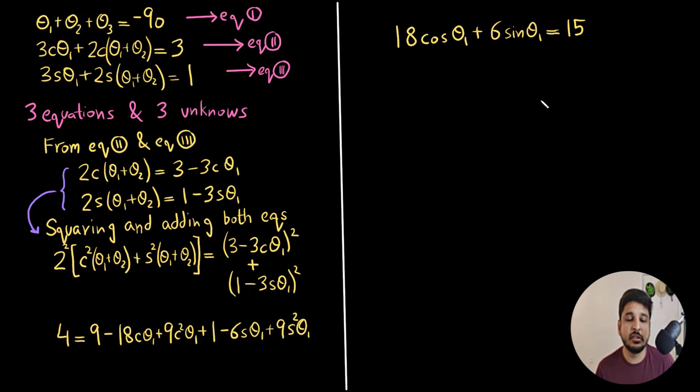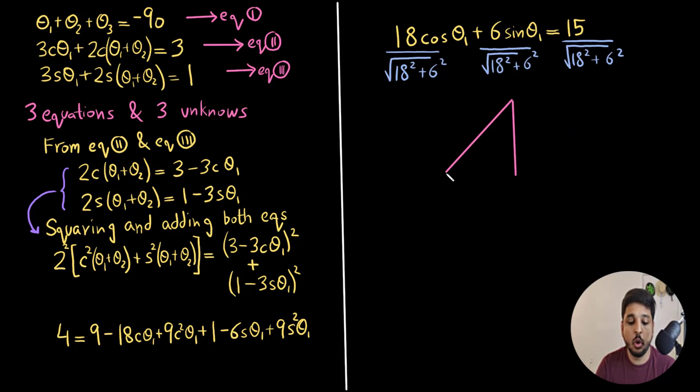What this technique is, is that you just divide all of the terms by the square root of the sum of the squares of the cosine and the sine terms. What I mean is that you divide them by the square root of 18 square plus 6 square.